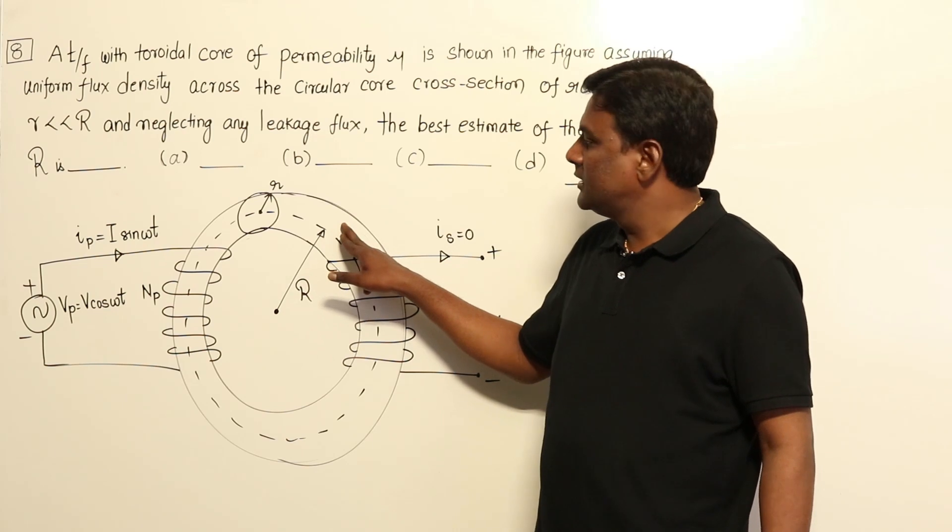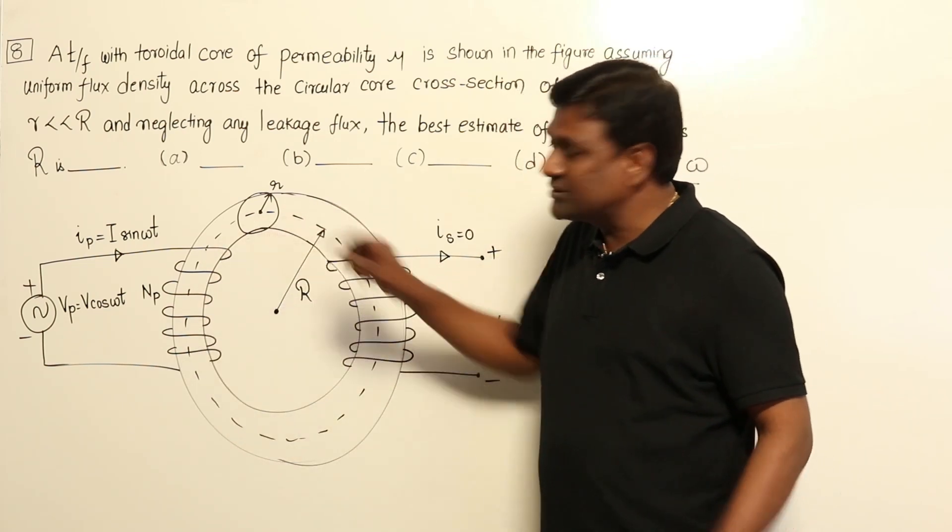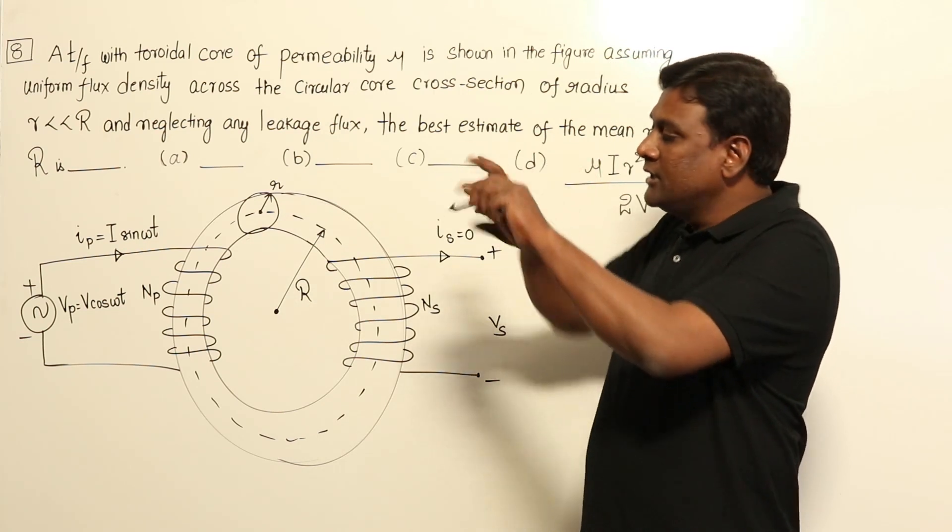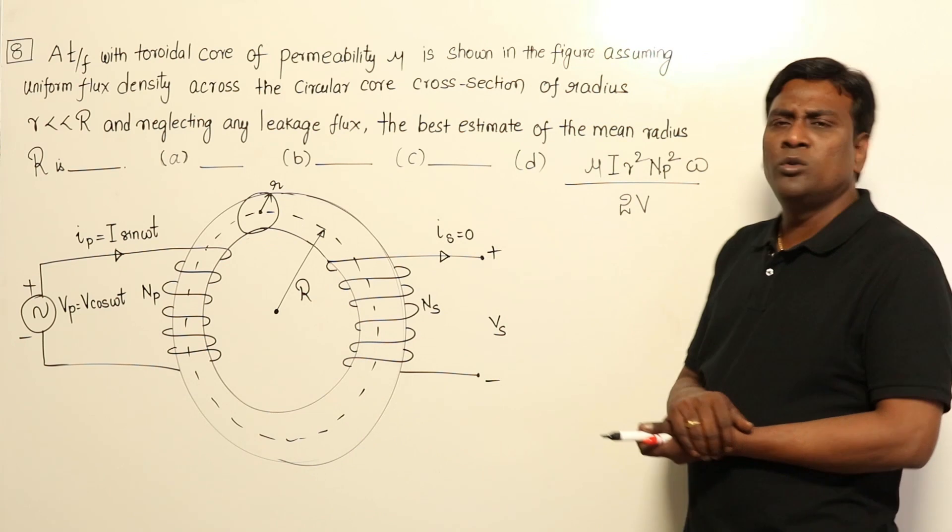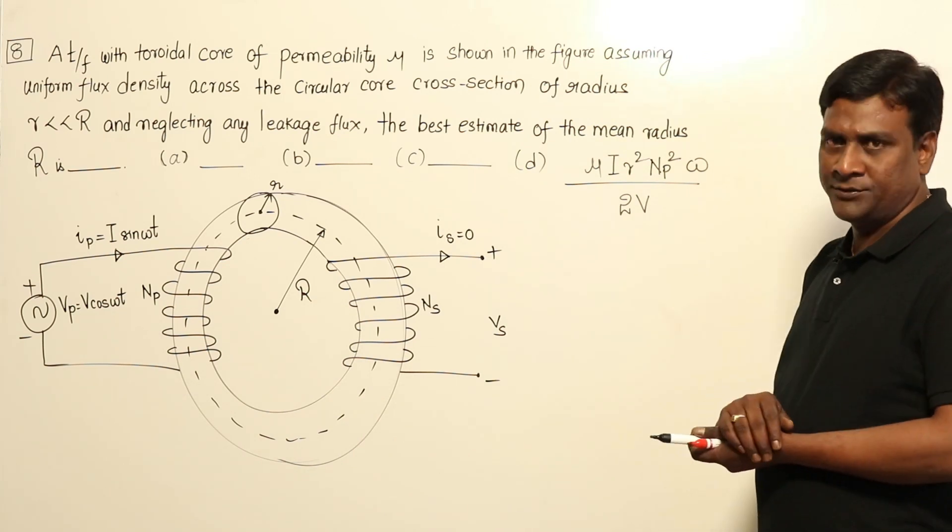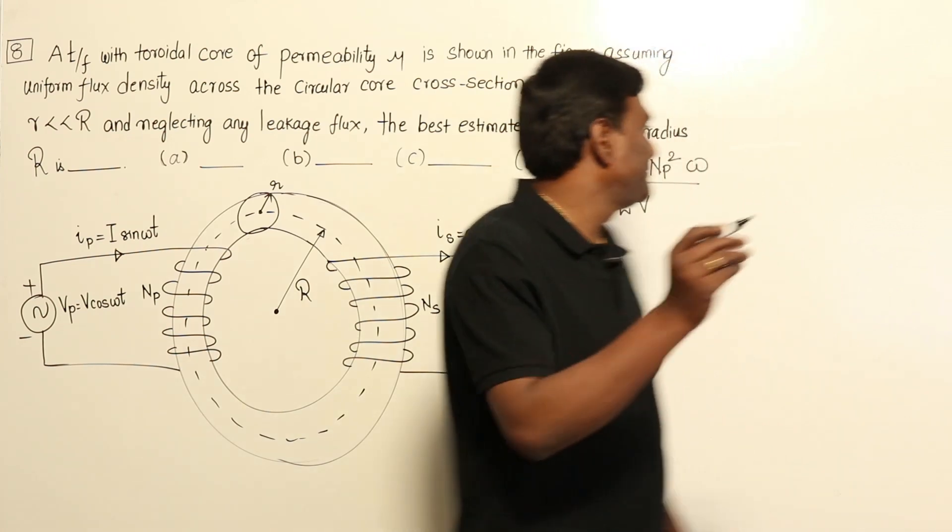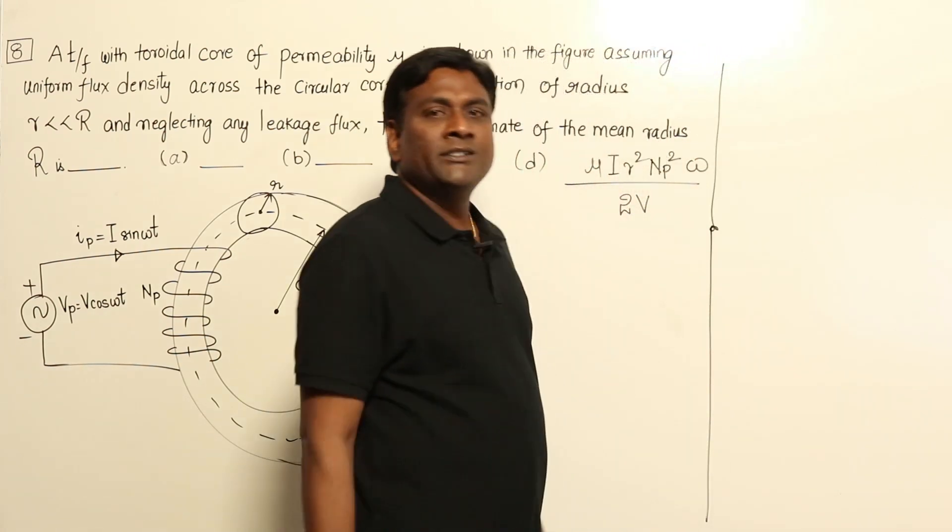This is a toroidal core and the cross-section is going to be circular. It's closed like a circle in this way. Now we don't have any formulas in hand, so let us try to derive the answer. What are the basic equations we remember?